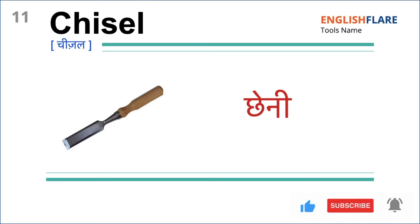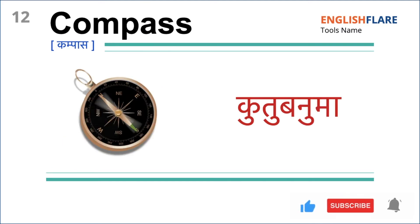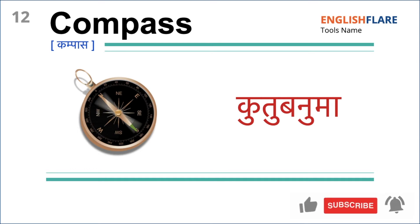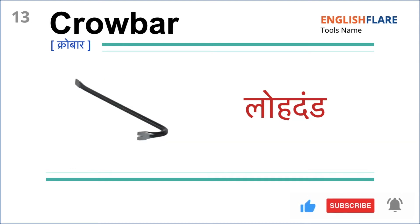Chisel — Chheni. Compass — Kutubnuma. Crowbar — Lohdand.